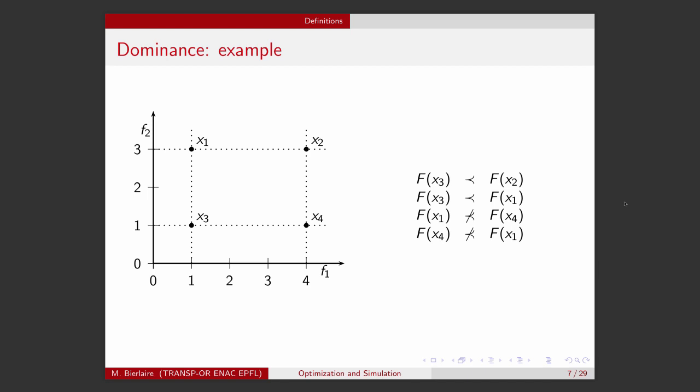Let's consider here an example where we have two objectives that we want to minimize. So, here the X axis corresponds to the objective F1, and the second axis corresponds to the second objective F2. And we consider four vectors, X1, X2, X3 and X4. And then we try to look at the dominance relationship between these solutions.